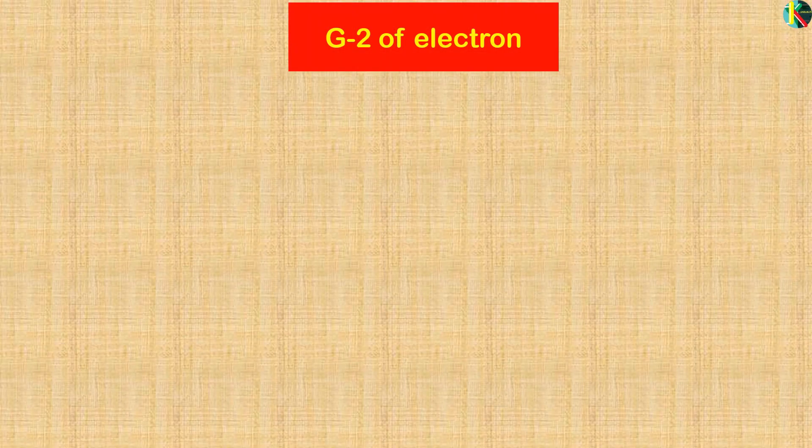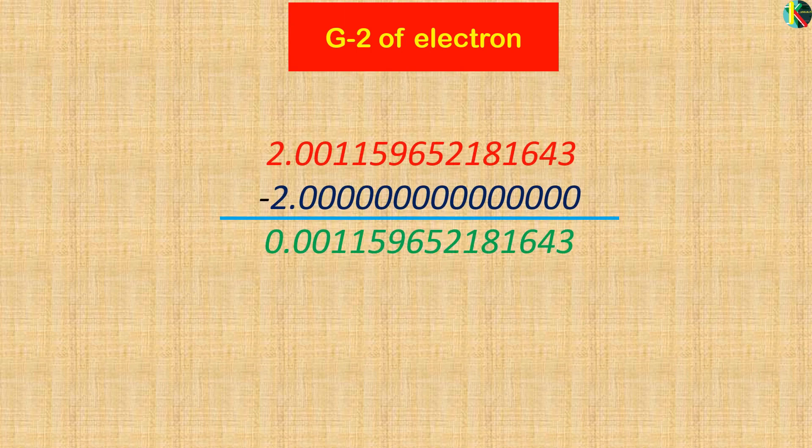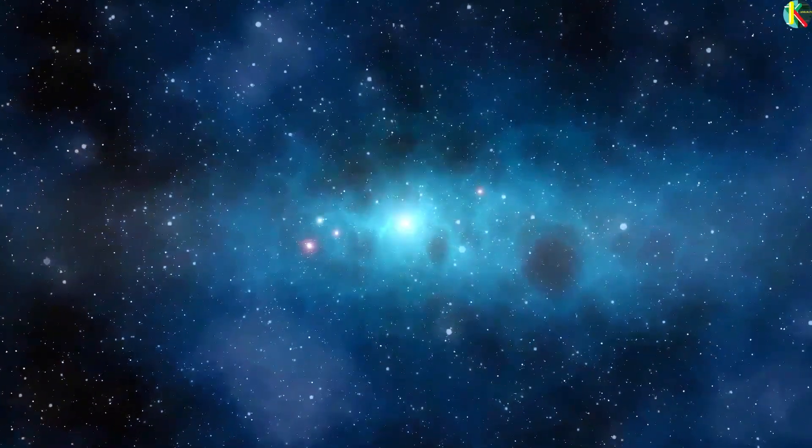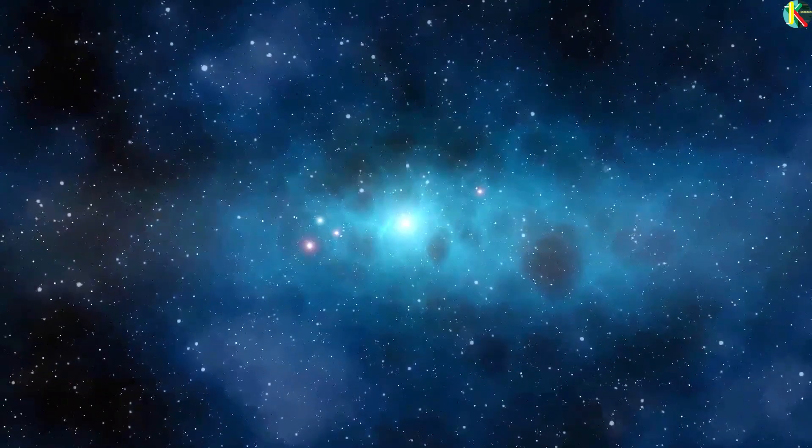So the g-2 in Fermilab's experiment name refers to the deviation of g from 2 and this difference is the anomalous magnetic dipole moment.